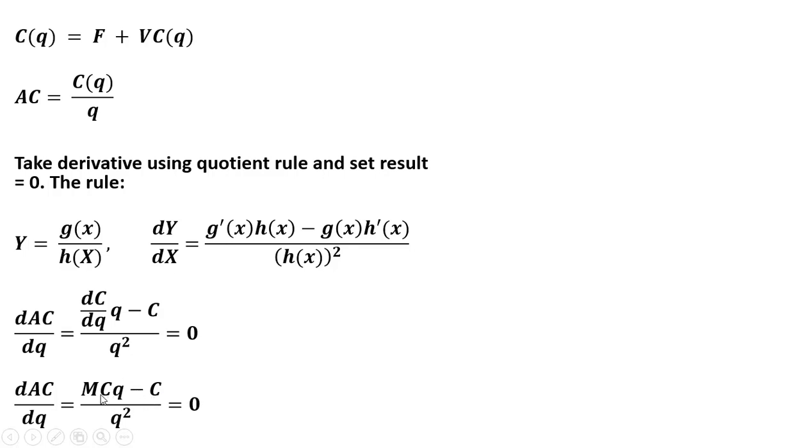So the first thing I'm going to recognize is the derivative of cost with respect to quantity is marginal cost. So MC, and that's still being multiplied by q here. Everything else is unchanged.